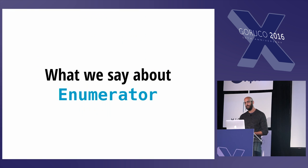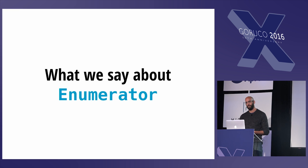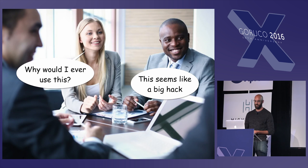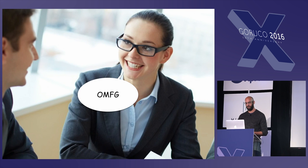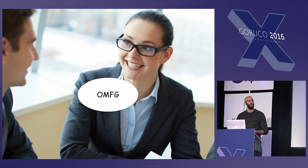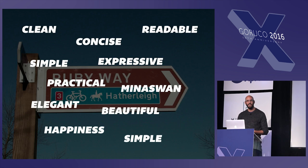In contrast, here's some things that Rubyists say about Enumerator: "I don't get it." "That's ugly." "Why would I ever use this?" "This seems like a big hack." Something about Enumerator doesn't quite feel right. It doesn't feel like the Ruby way. It's not clean, concise, or elegant. It's awkward.